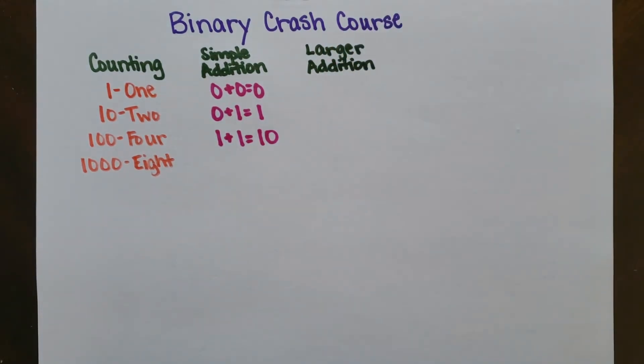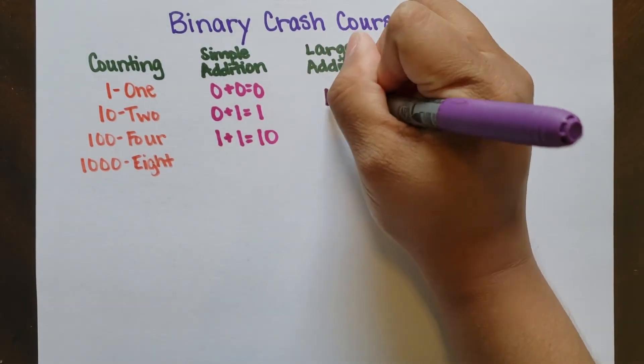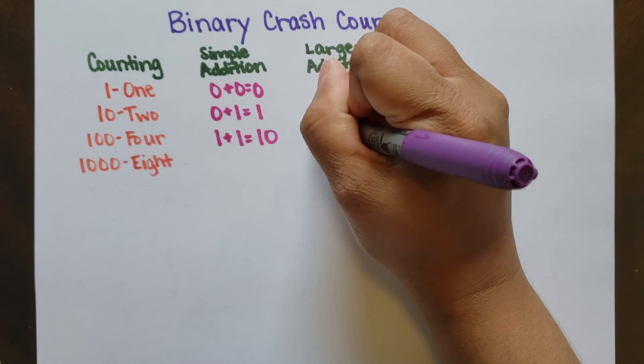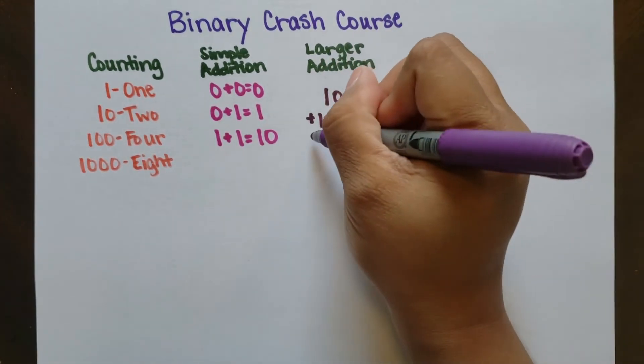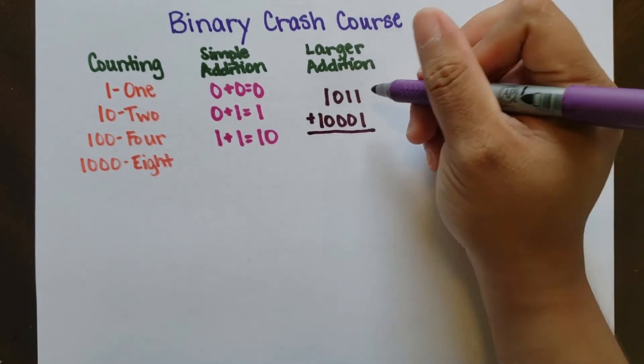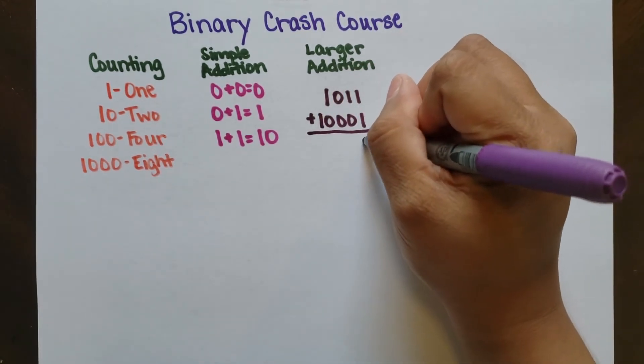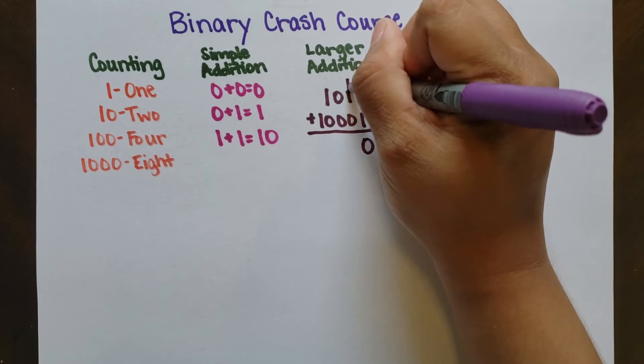For example, let's go ahead and add together the numbers 1011, which is 11, and 10001, which is 17. The two rightmost digits are both 1s, so 1 plus 1 is 10. We bring down the 0 and carry the 1 to the top.